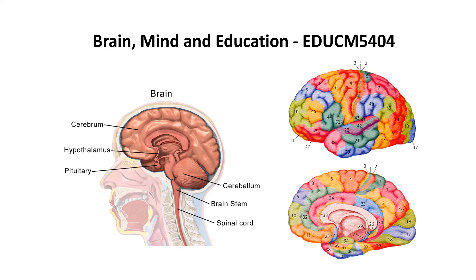Then there is brain, mind and education — a 20 credit unit where you will be learning much more about the relationship between the brain and how we learn. This introduces you to a lot of neuroanatomy and an understanding of neural function.